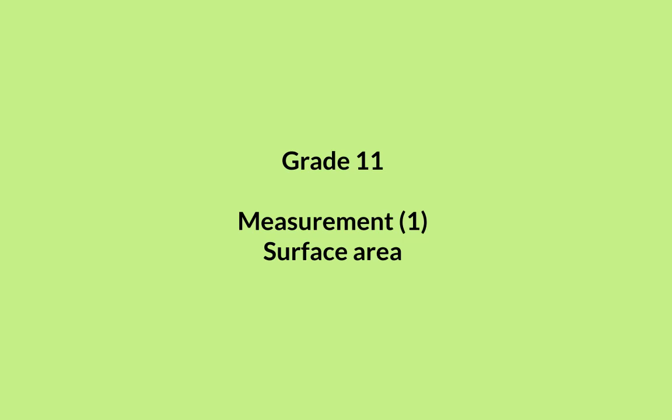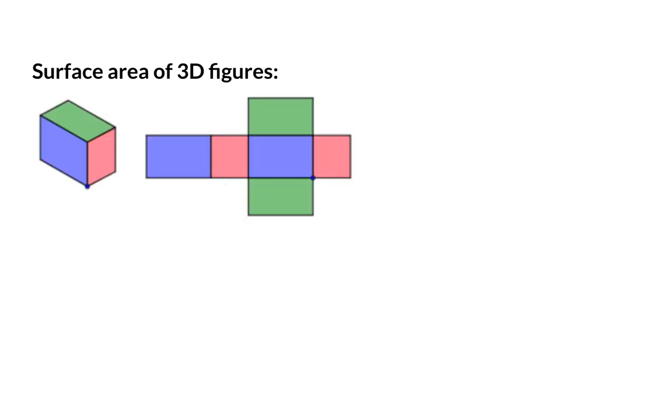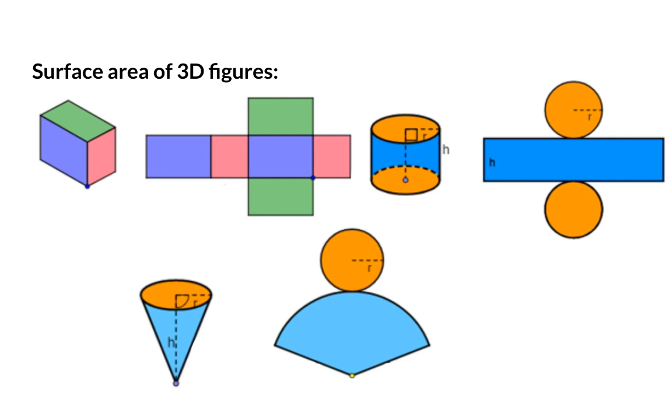In this first lesson for measurement in grade 11, we are going to have a look at calculating the surface area for all the figures you've learned up to grade 10. To determine the surface area of a three-dimensional figure, the area of each side should be calculated and they should all be added up. This means you actually fold open the three-dimensional figure into a net and then determine the area of each part and add it up.